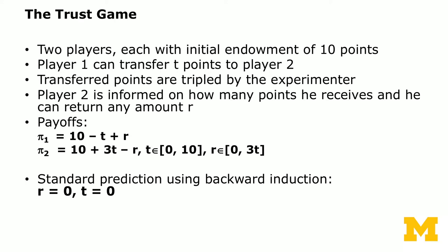The payoff structure for player one is: pi one equals 10 (the initial endowment) minus T (the transfer passed to player two) plus R (the amount returned). Player two's payoff is 10 (the initial endowment) plus three times T — remember, any point transferred to player two is tripled by the experimenter — minus R, the points returned to player one.